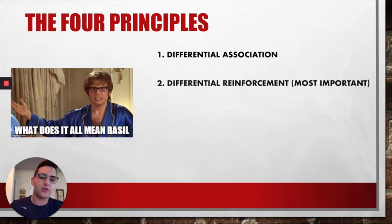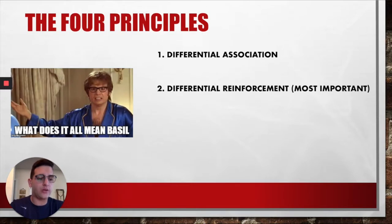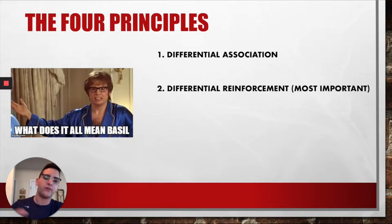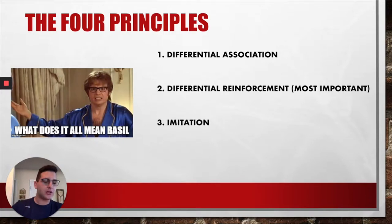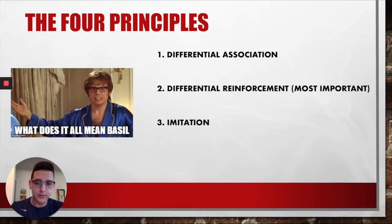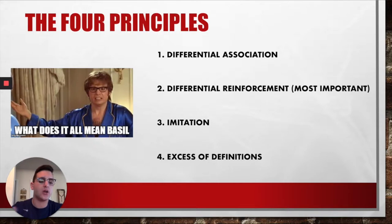The second and most important is differential reinforcement, which is when deviant behavior is differentially reinforced over behavior that is in conformity to the norm. The third is imitation, which is when a person is more exposed to and observes more deviant models than conforming models. The fourth is an excess of definitions, which is when a person's own learned definitions are favorable toward committing deviant acts.